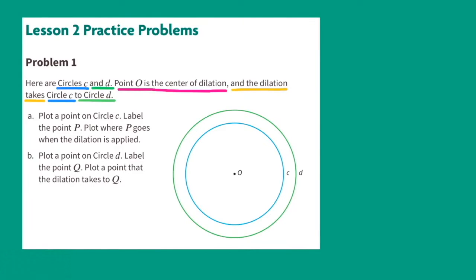Point zero is the center of dilation, and the dilation takes circle C to circle D. Part A: Plot a point on circle C.